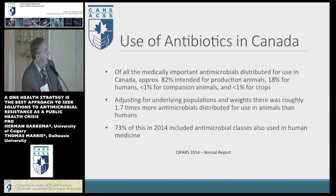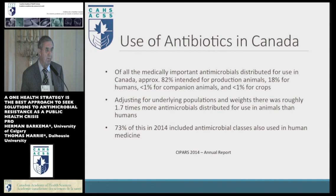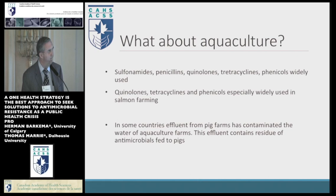In Canada, of all the medically important antimicrobials, 82% are intended for production animals, 18% for humans, less than 1% for companion animals, and 1% for crops. Adjusting for underlying populations and weight, there were roughly 1.7 times more antimicrobials distributed for use in animals than in humans — easy to remember, it's about two times more in animals than in man. 73% of this included antimicrobial classes that we use every day in human medicine.